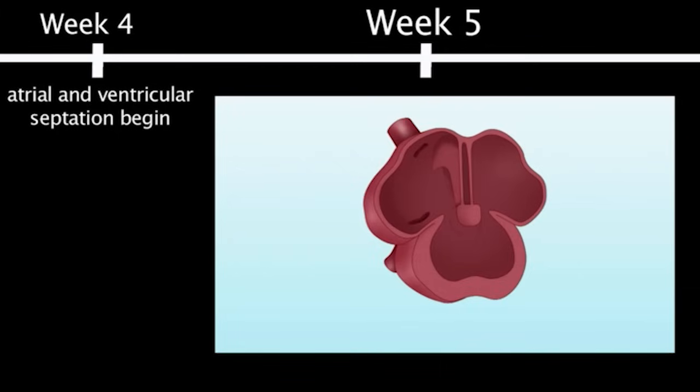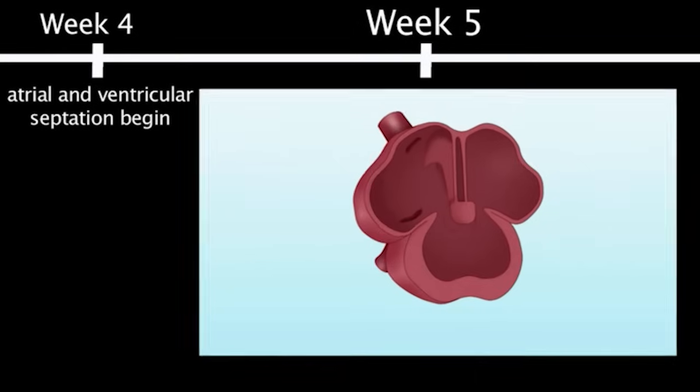By the fifth week of fetal life, the atria completely separate into the right atrium and left atrium. Also at this time, the ventricular septum continues to grow in size.